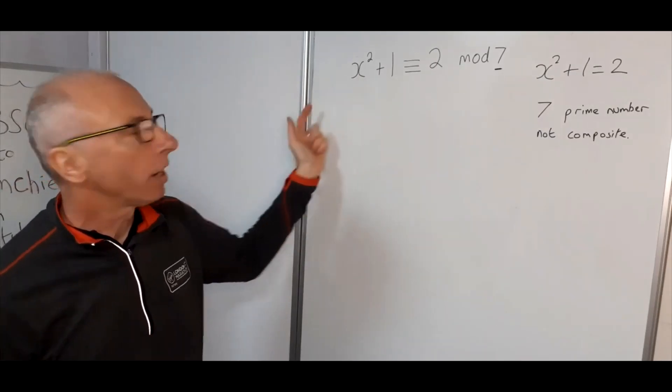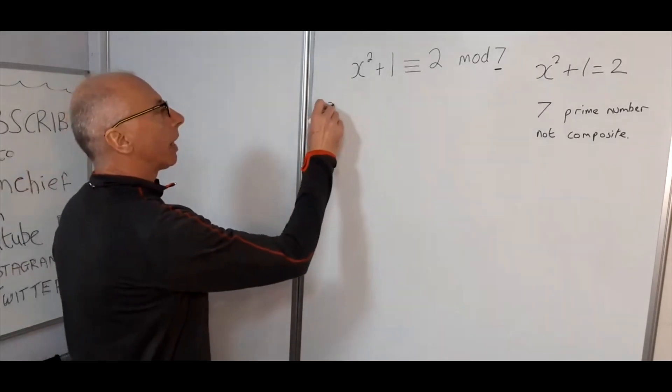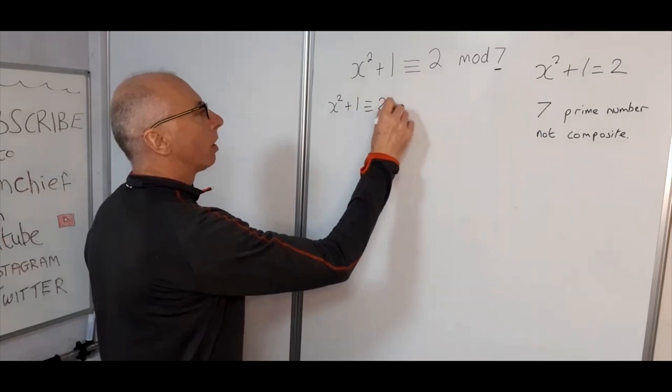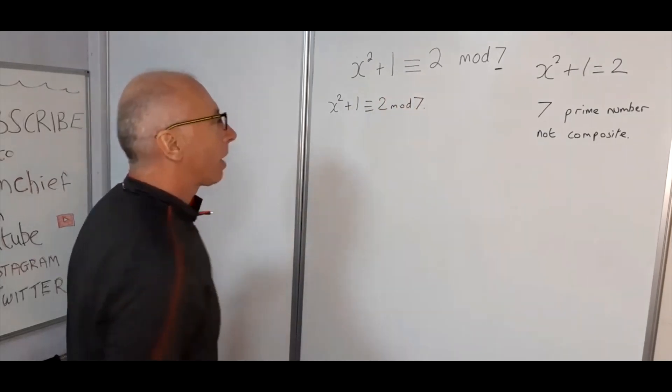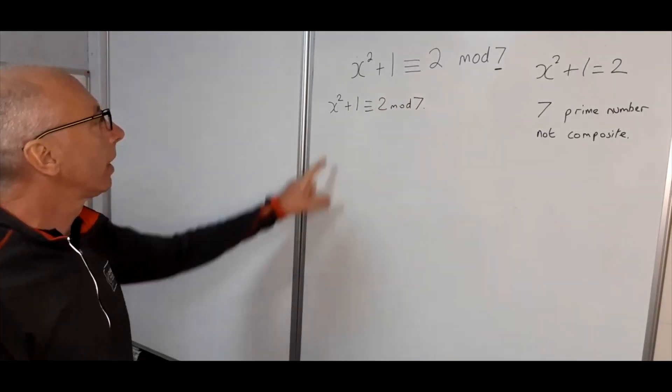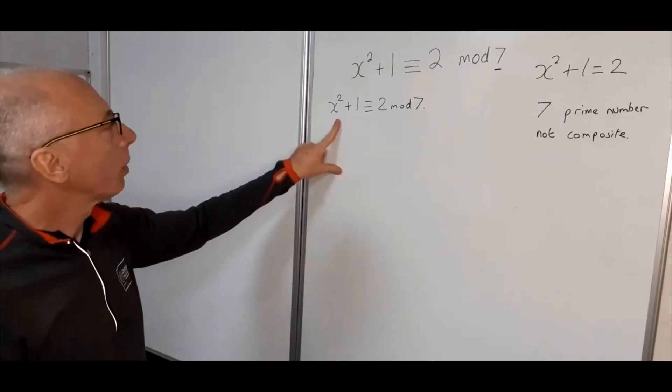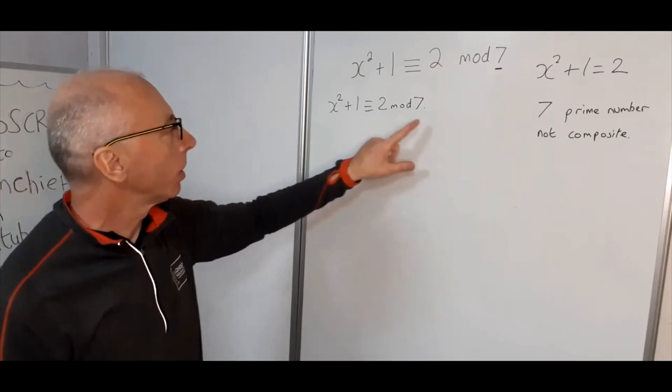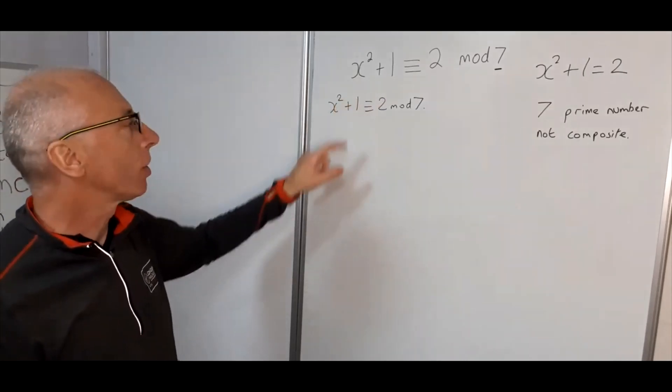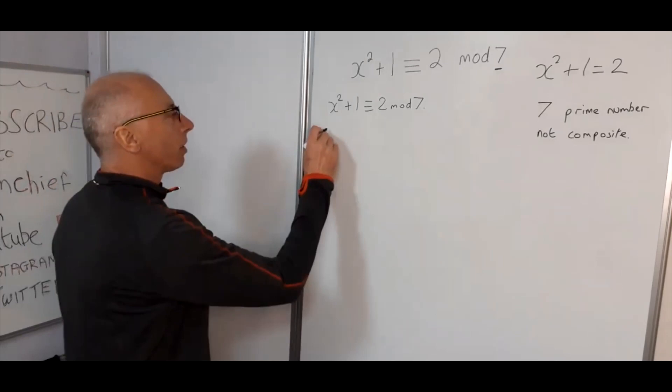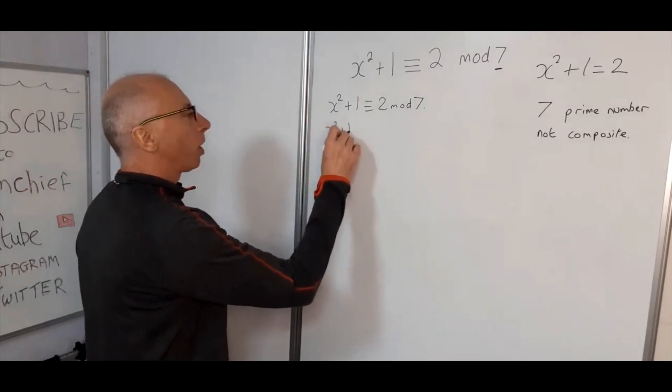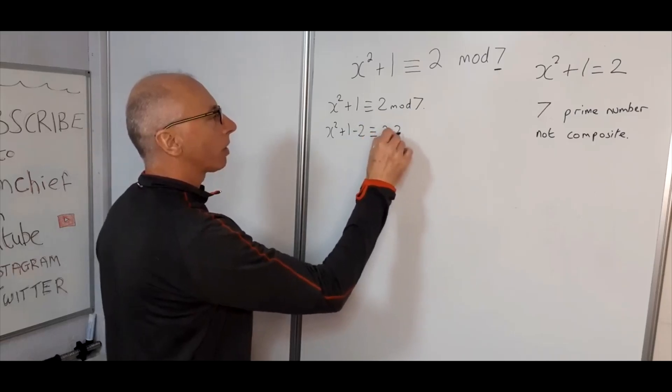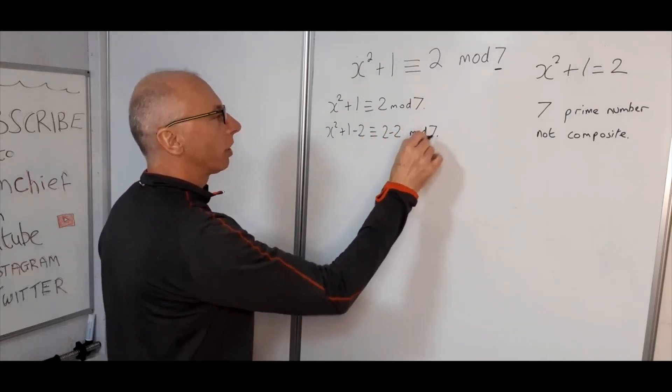So let's go down either route. x squared plus 1 is congruent with 2 mod 7. Now what we can do is, because this is a prime number not a composite number, we can bring this 2 over to the other side.